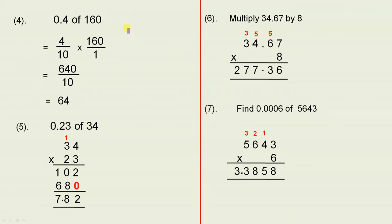0.4 of 160. Now we said that sometimes you can change the decimal to a fraction, so this is a good example where we can do that. So 4 over 10 times 160 over 1. We've done examples like this in the past. 4 times 160 is 640, 10 ones are 10. 640 over 10, so we're dividing by 10, so the answer is 64.